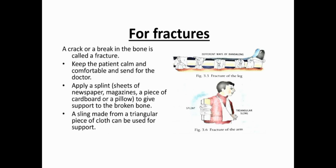For fractures — a crack or break in a bone is called a fracture. Keep the patient calm and comfortable and send for the doctor. You can apply a splint — sheets of newspaper, magazine, a piece of cardboard, or a pillow — to give support to the broken bone. A sling is made from a triangular piece of cloth and can also be used for support. Both the splint and the sling can be used, and for a leg fracture, different ways of bandaging can be done.